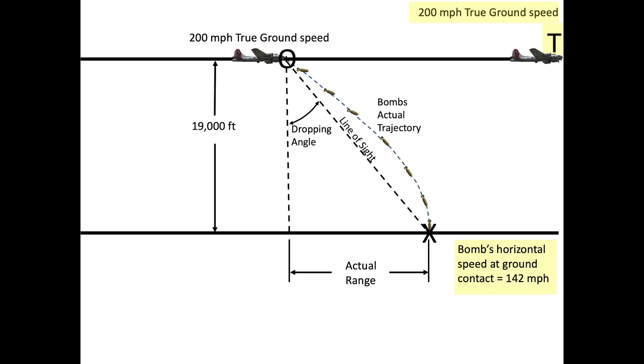Since the bomber is still maintaining a 200 mile per hour speed, it must have flown beyond the target at bomb impact. The horizontal distance from the bomb impact location X and point T is the trail.